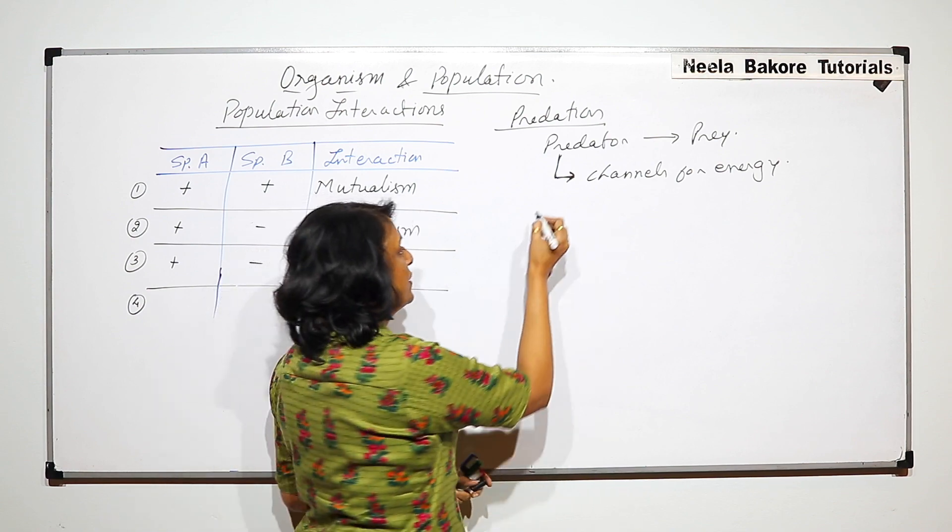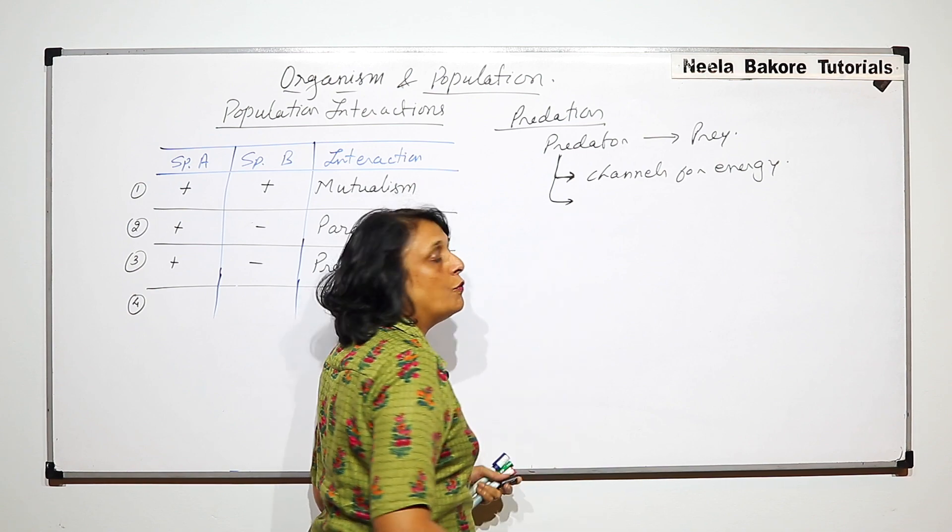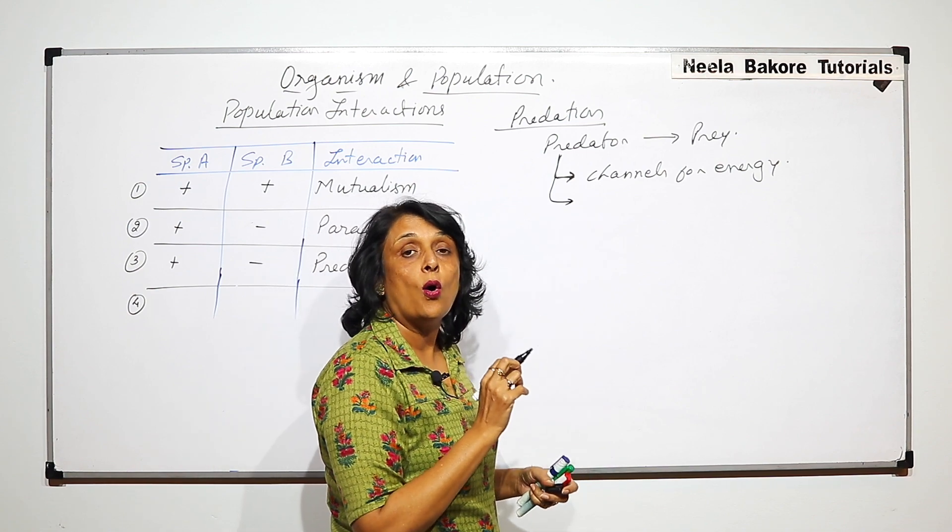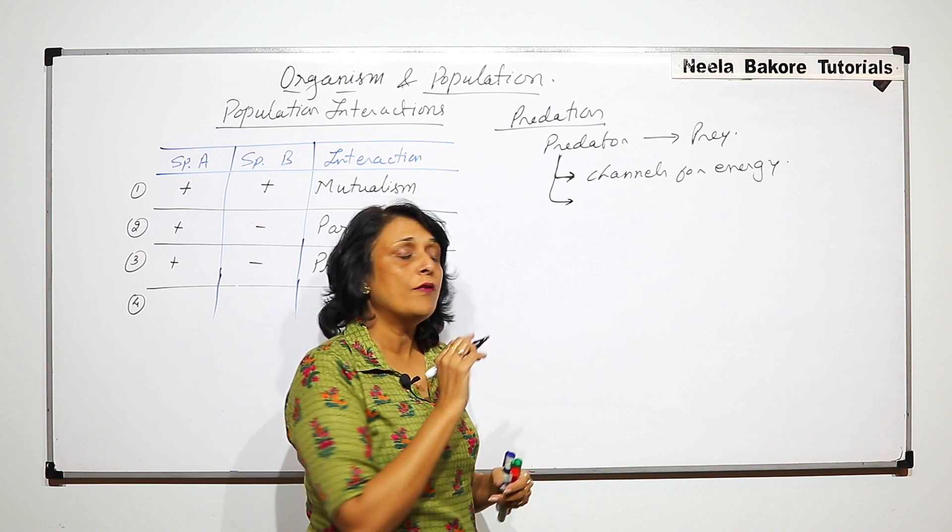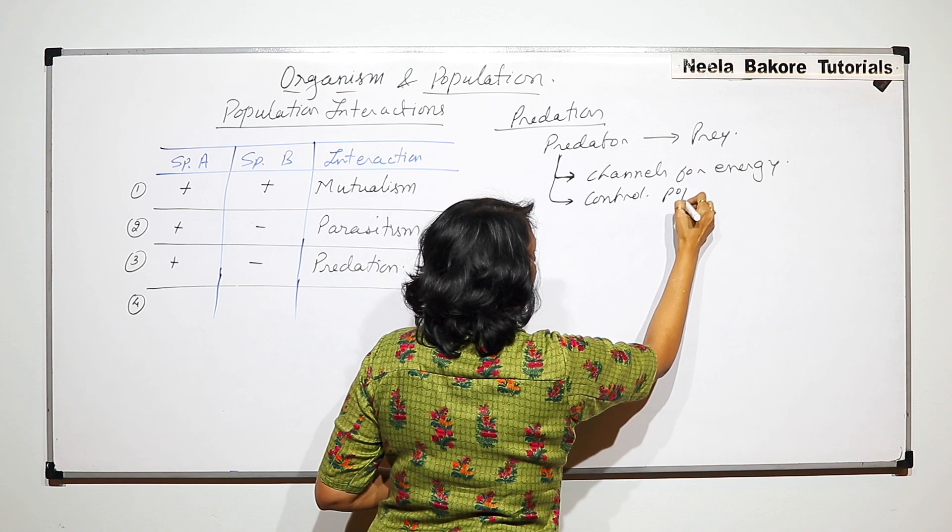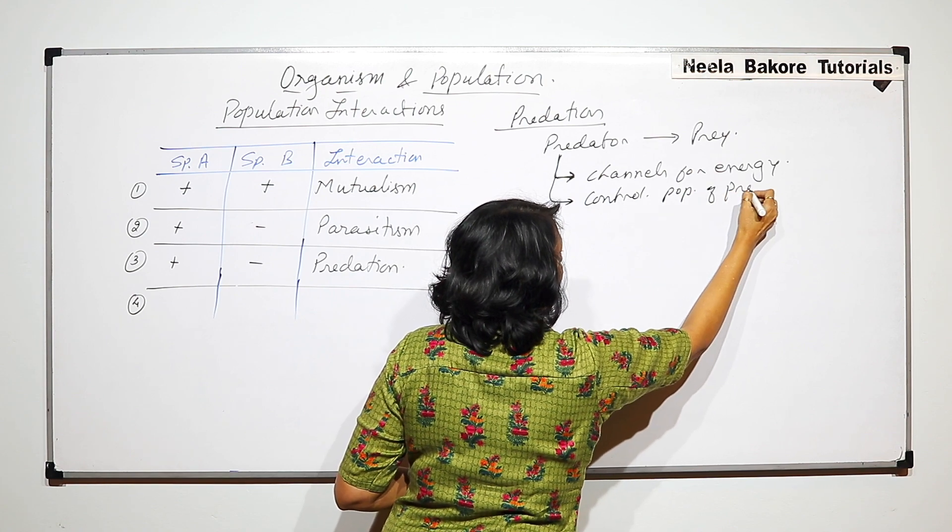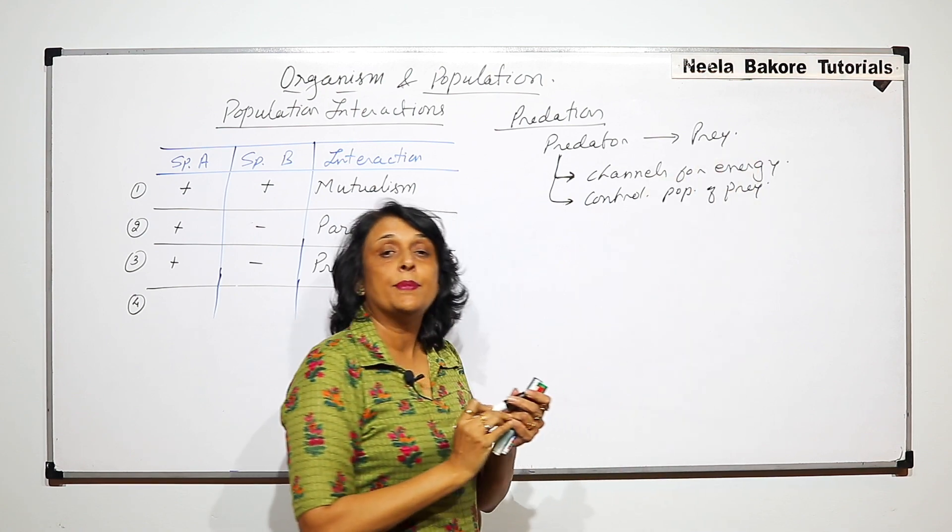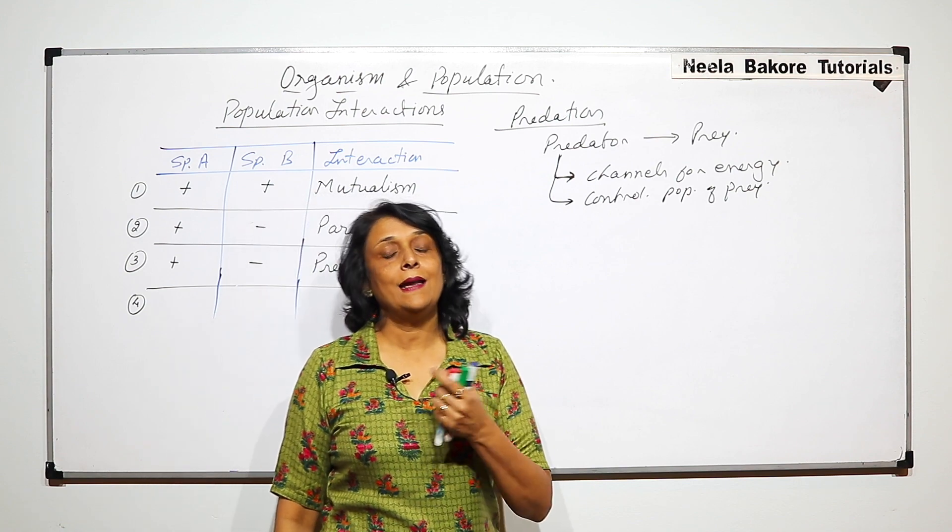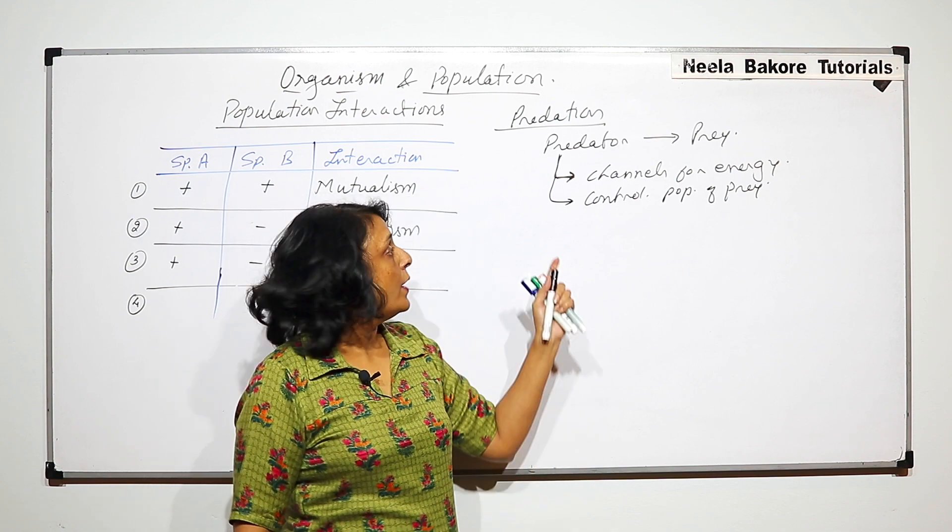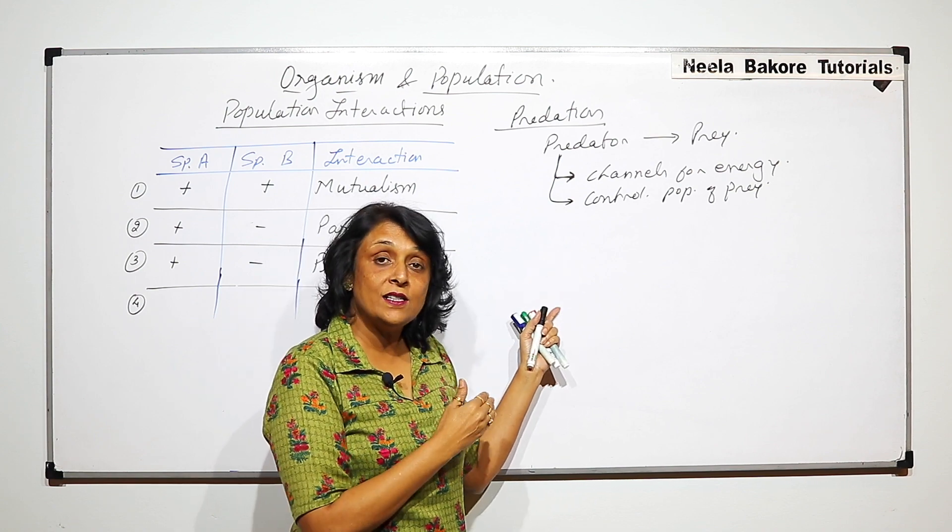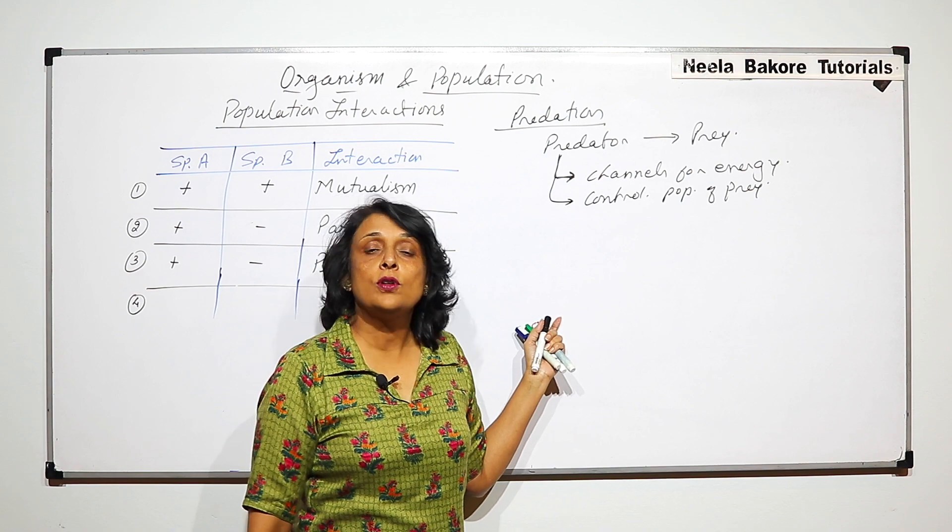The other role which these predators play is to keep a check on the population of the prey. They control the population of the prey. We can take an example: say there is a grassland, there are some goats and a tiger. If the tiger is removed, that means the predator is removed.